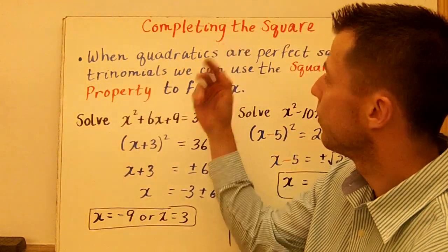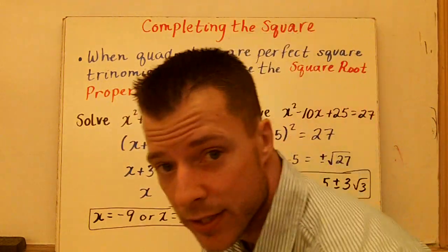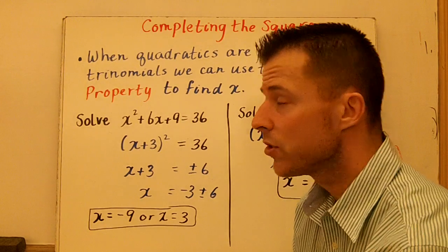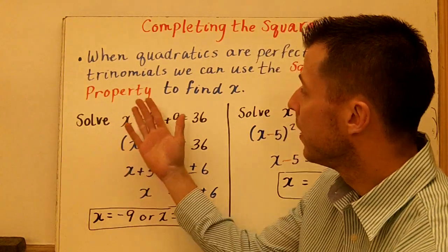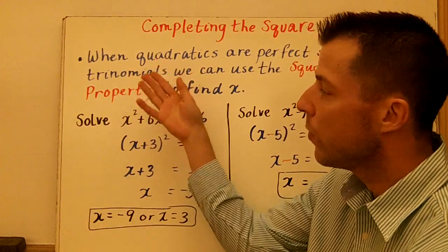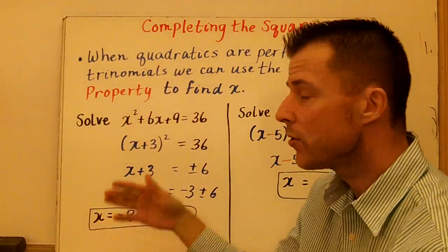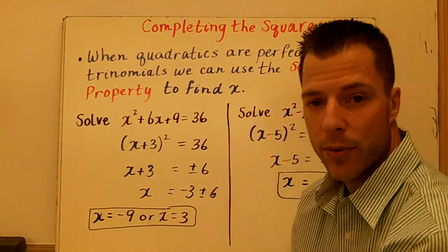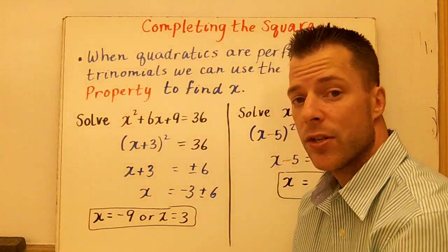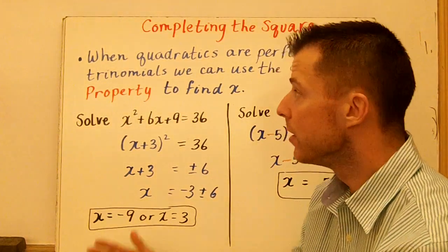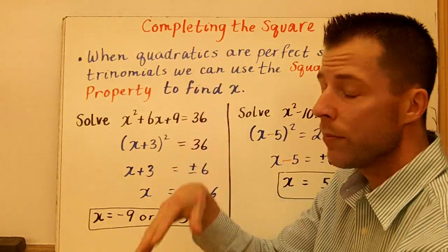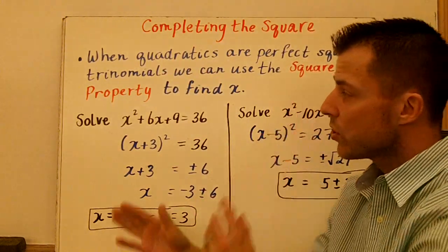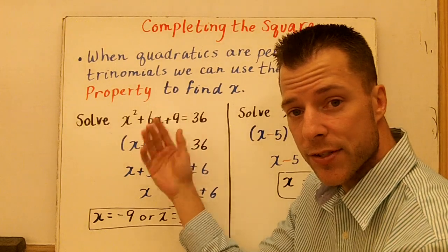Welcome to Completing the Square. It's another method of solving quadratic functions. The big thing you have to realize is that when we have quadratics that are perfect squares, we can use the square root property to find x. That's the whole idea of this lesson — we're going to complete the square so that we can use the square root property to find x.